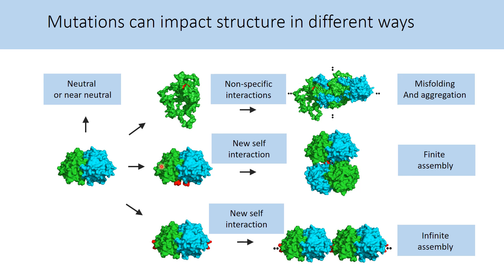Since this protein is a homo-dimer, any mutation is repeated twice in the structure. In this case, they occur on the same surface patch of the structure and lead to forming a dimer of dimers. The resulting tetramer is a finite complex. In this other case, new self-interaction patches occur on opposite regions of the homo-dimer. This results in the formation of a potentially infinite filament.